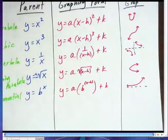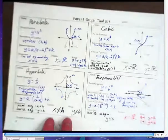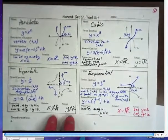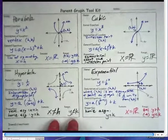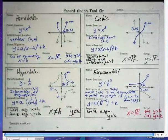Now, we have what's called the parent graph toolkit. So what I'm going to do is I'm going to show you where we're at on our parent graph toolkit for today, and then what you need to do is pause this video, and after you pause the video, you can copy everything down that's on here. This is what we covered in class as far as everything that we know about parabolas, cubics, hyperbolas, and exponentials.